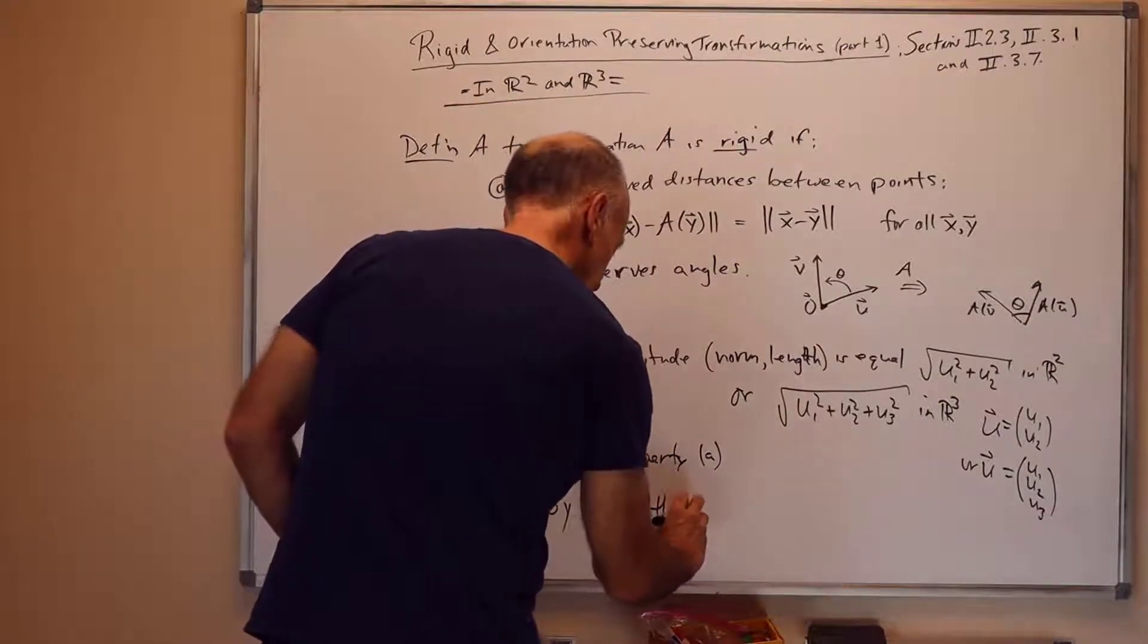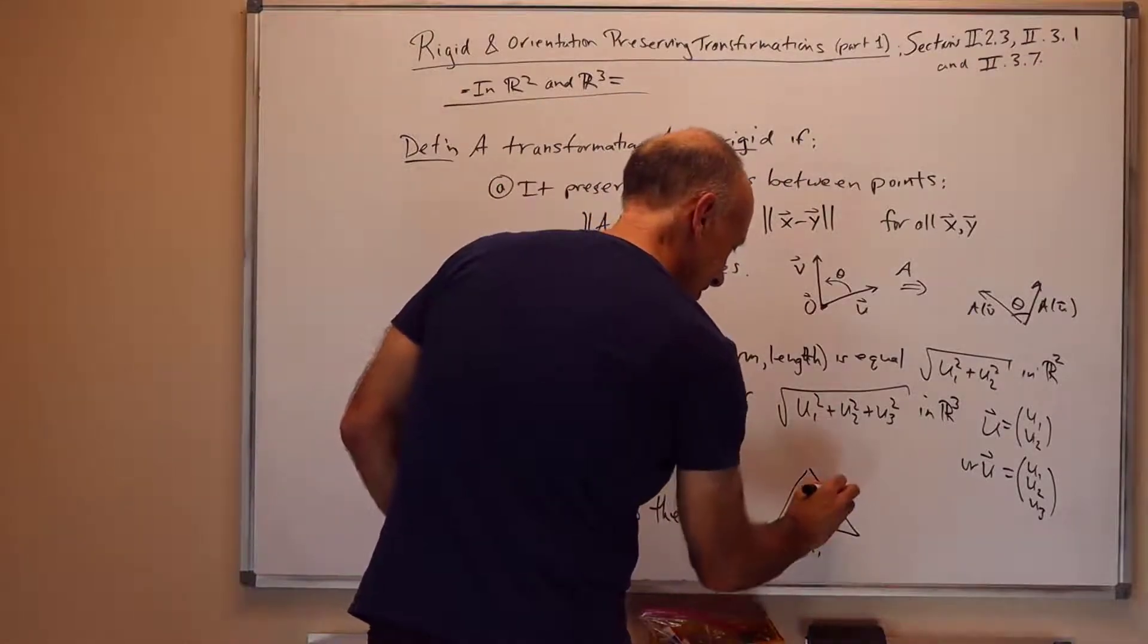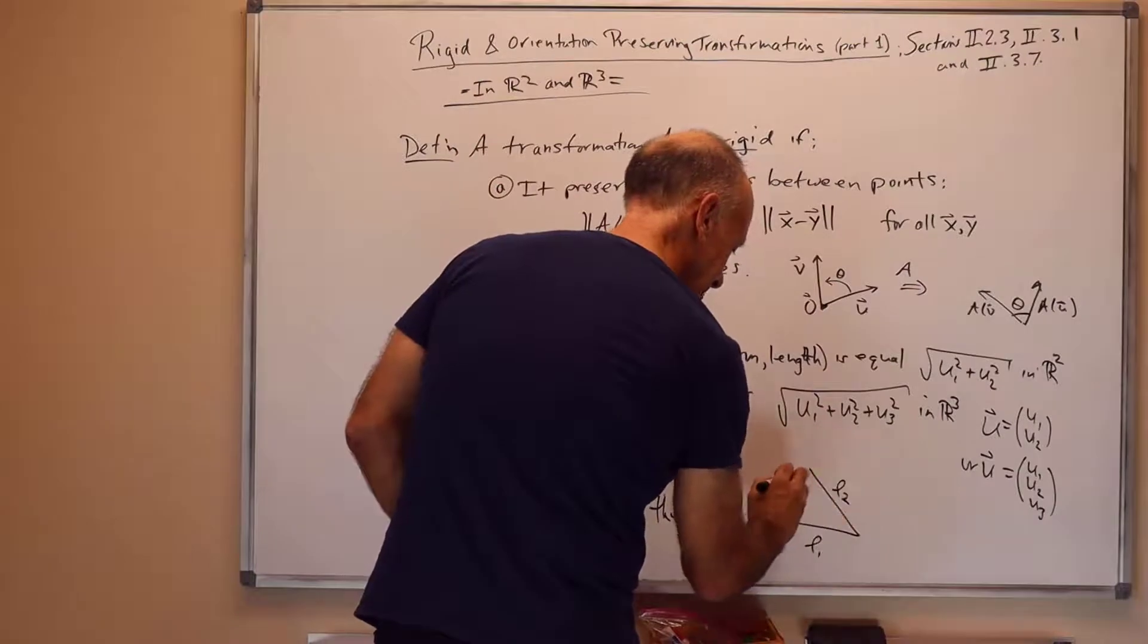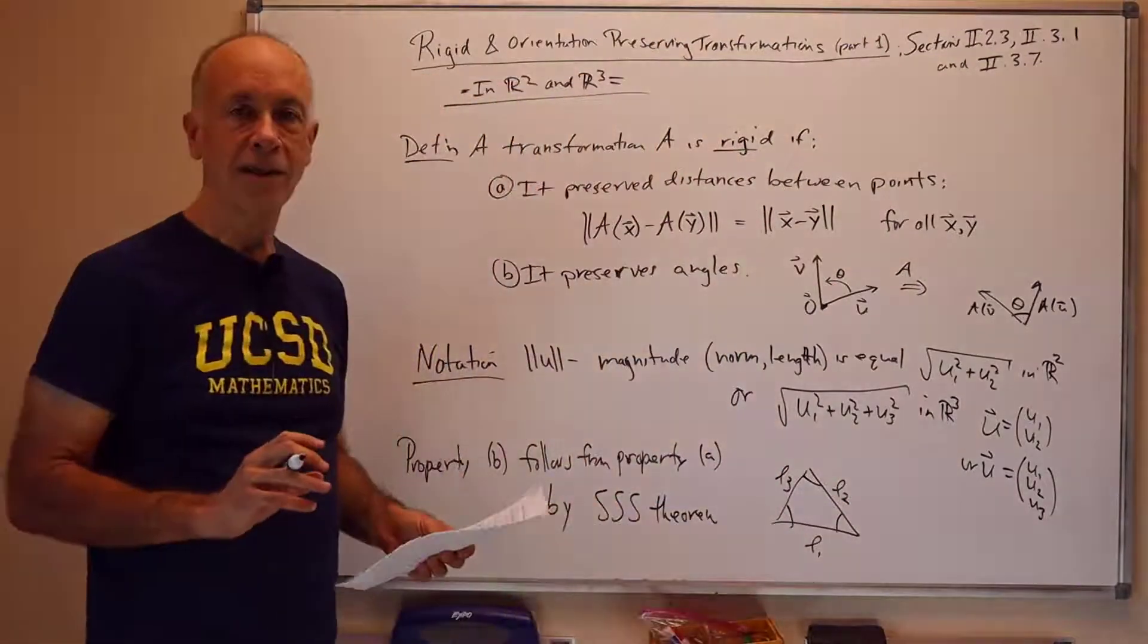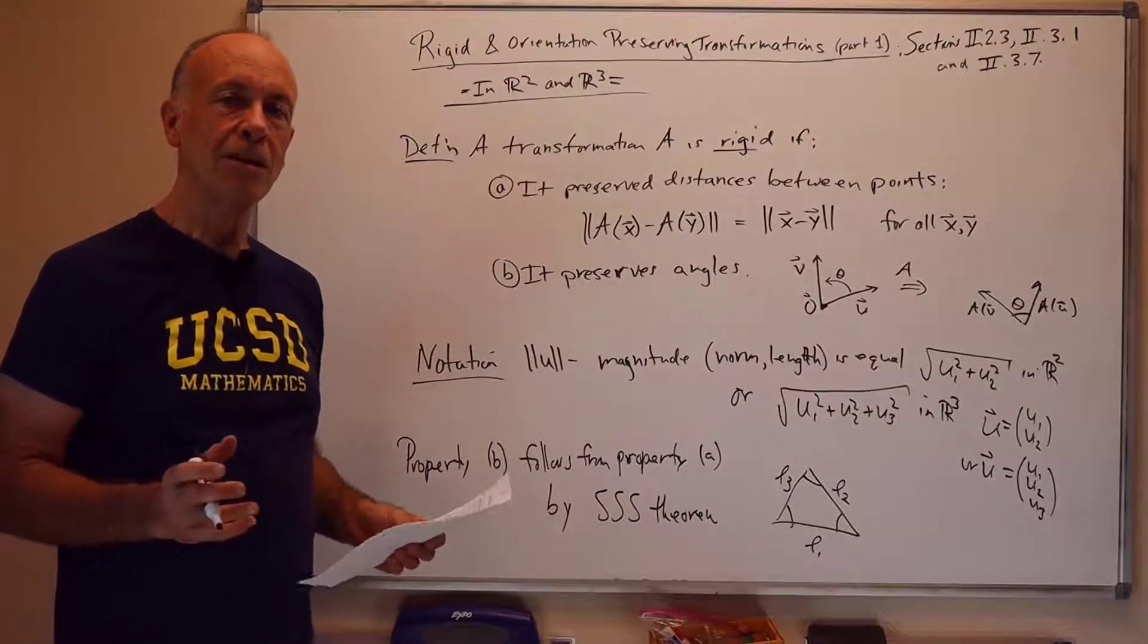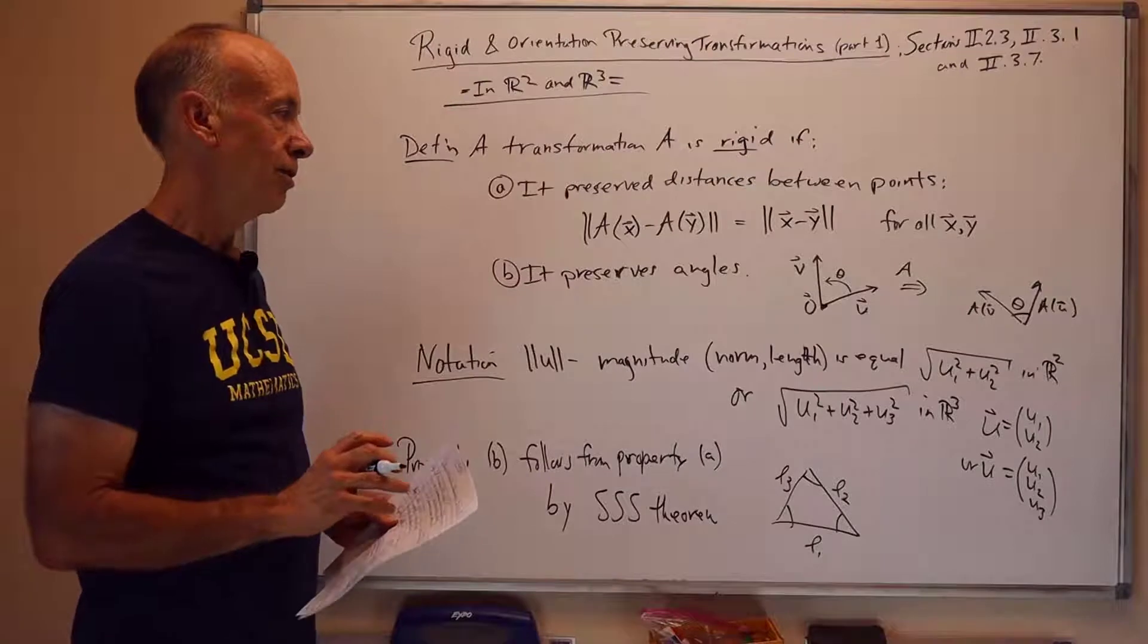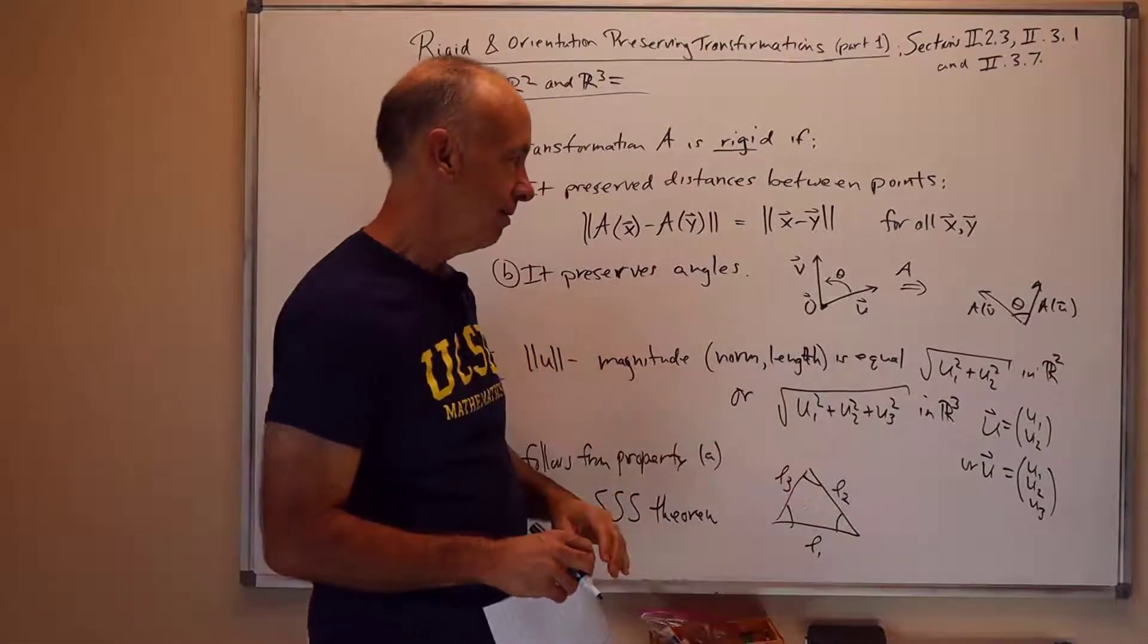The side-side-side theorem says if you have a triangle with side lengths L1, L2, L3, that that uniquely determines the angles at the corners of the triangle. So, if the mapping preserves the distances between points, it also preserves the angle between the lines, just because it will preserve the lengths of a side of a triangle.